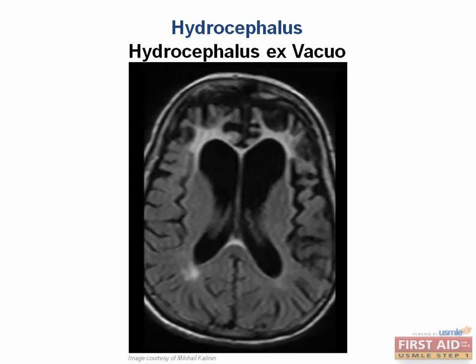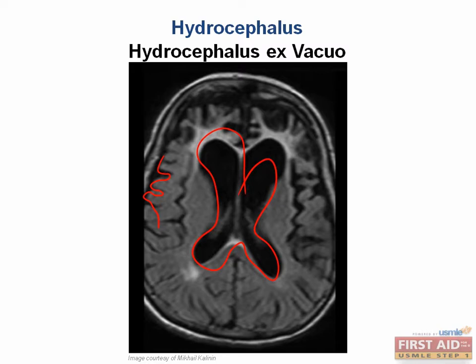Hydrocephalus ex vacuo occurs in areas of previous brain damage where brain tissue is resorbed and filled in with CSF. It is not symptomatic. On imaging, you see very dilated lateral ventricles and extensive cortical atrophy. In Alzheimer's disease, you would see cortical atrophy as well as hydrocephalus ex vacuo. Look out for a patient with progressive cognitive decline that also has hydrocephalus on imaging.